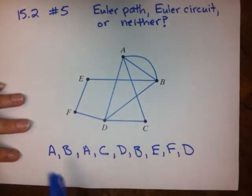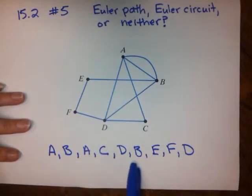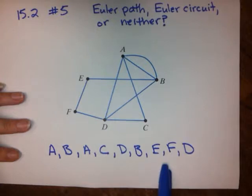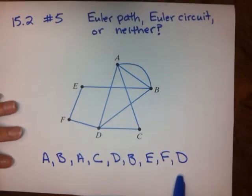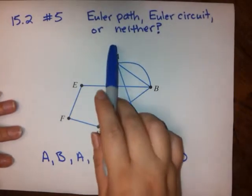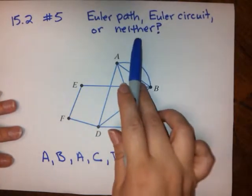They've given us a path from A to B to A to C to D to B to E to F to D, and they're asking us if it's an Euler Path, an Euler Circuit, or neither.